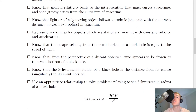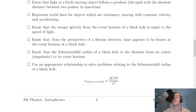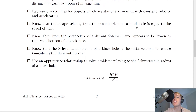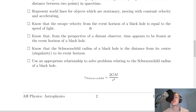Light or a freely moving object follows a geodesic — the path with the shortest distance between two points in space-time. You should also be able to represent world lines for objects which are stationary, moving with constant velocity, and accelerating. You need to know that the escape velocity from the event horizon of a black hole is equal to the speed of light, and that any object within the event horizon would need an escape velocity greater than the speed of light, which is not possible — this is what gives a black hole its trapping properties.